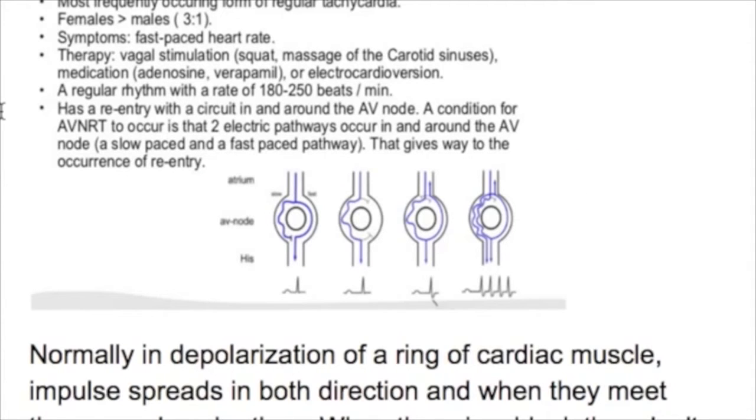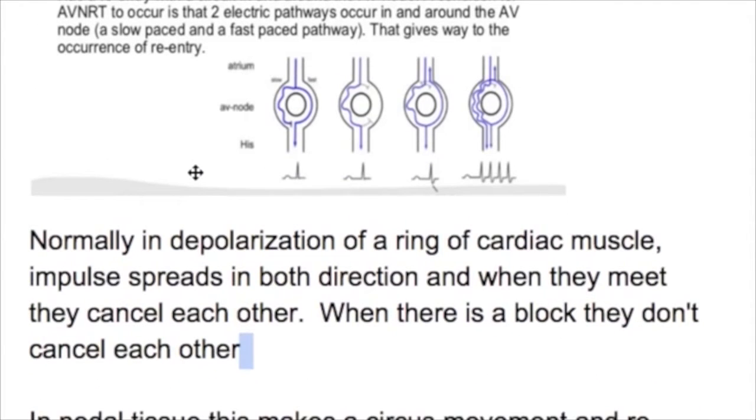It has a re-entrant circuit or circus pathway. This condition occurs when two electrical pathways exist, one slow and one fast. They go around the ring and cancel each other when they meet. But if there is a block, they don't cancel, resulting in a rhythm abnormality.